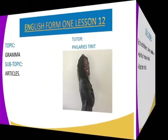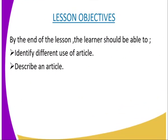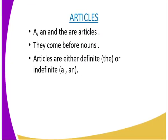Our lesson objective: we expect that at the end of the lesson, you as a learner or a student will be able to describe an article and identify the different uses of an article. We will begin by naming the articles. We have three types of articles.